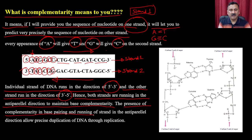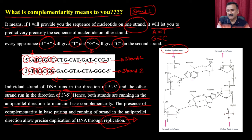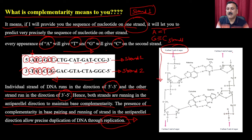The presence of complementarity in base pairing, and the antiparallel running of strands, allows precise duplication of DNA through a process known as replication. This concept is very important to understand because it will be used extensively when we discuss replication and transcription.